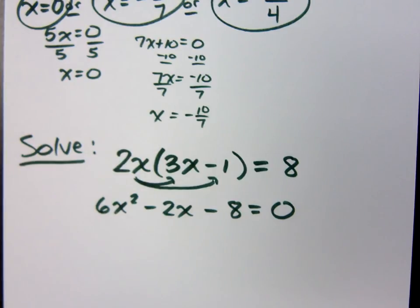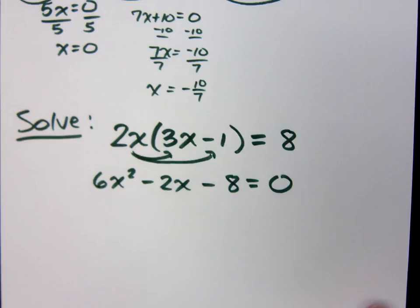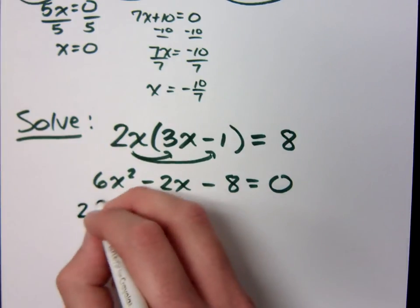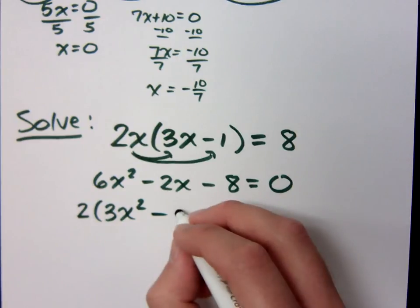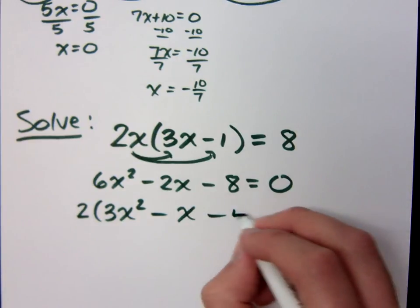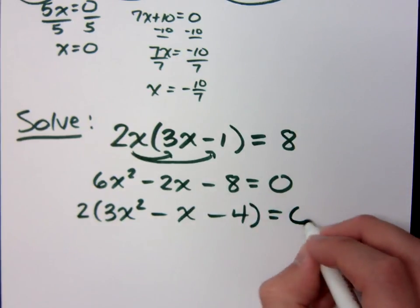Factor. I sure hope this factors, right? Oh sweet, common factor of 2, right? What am I left with? 3x squared minus x minus 4 is equal to zero.